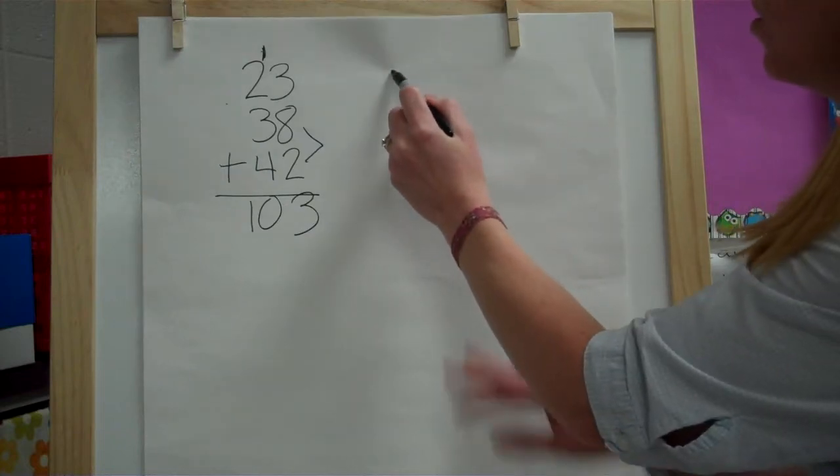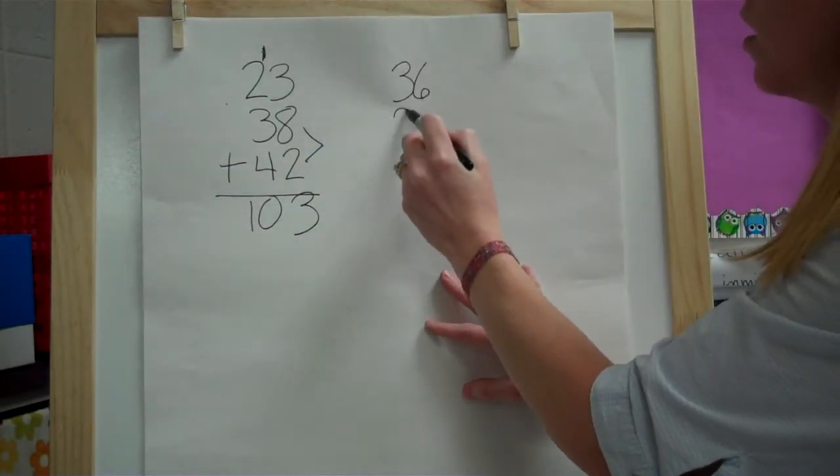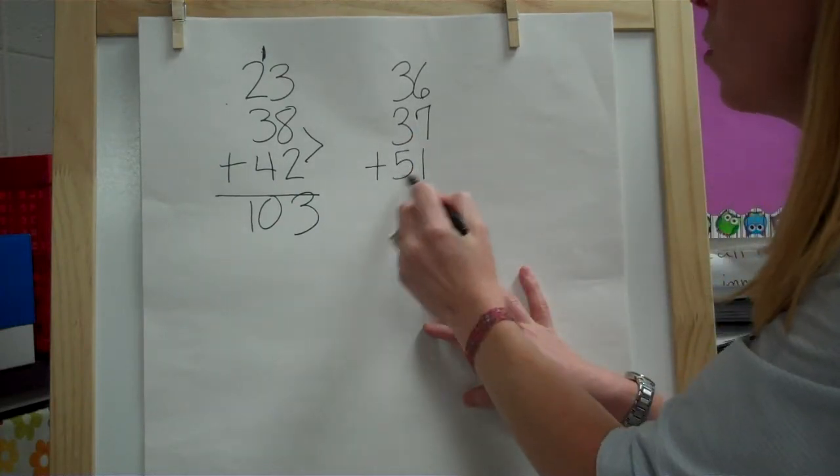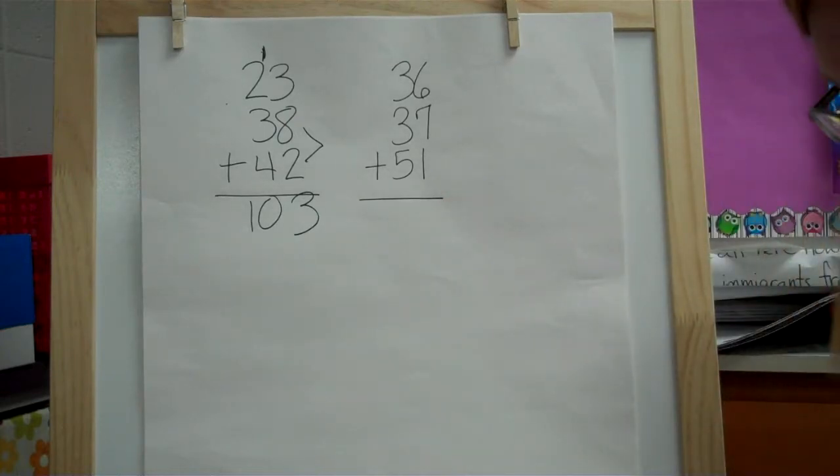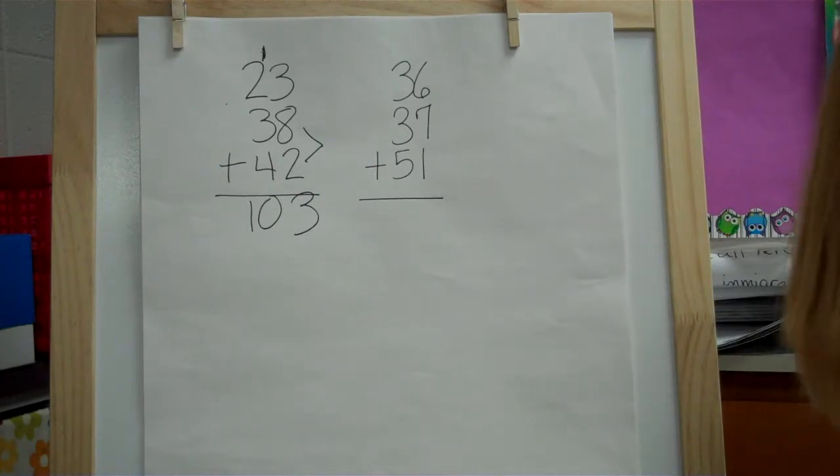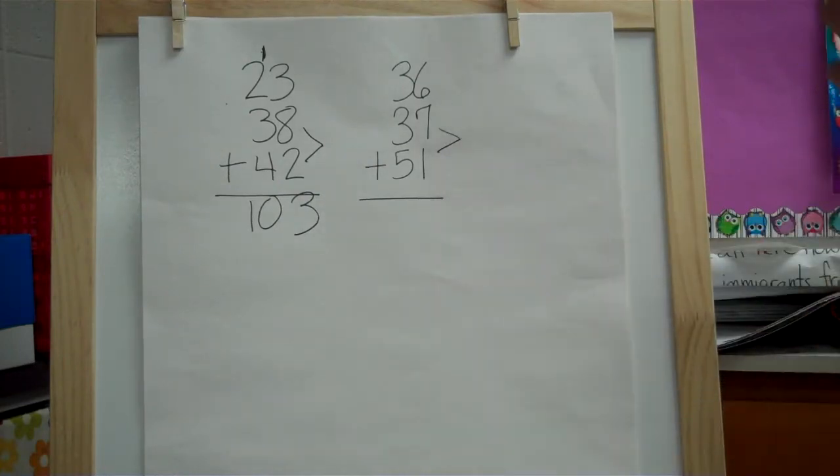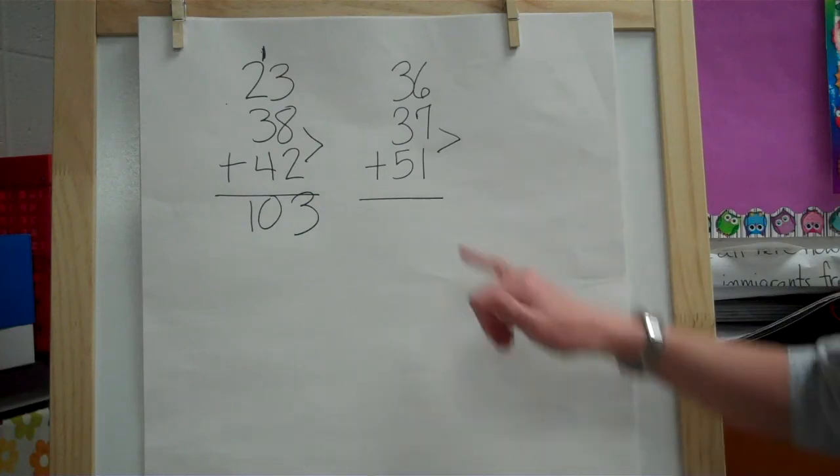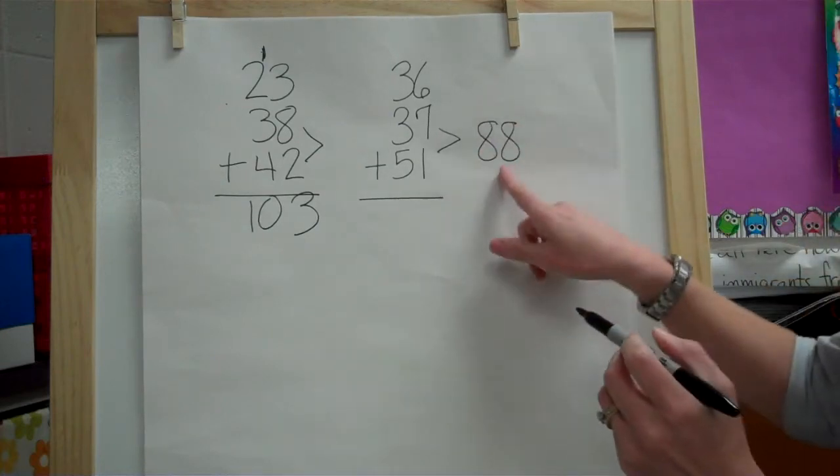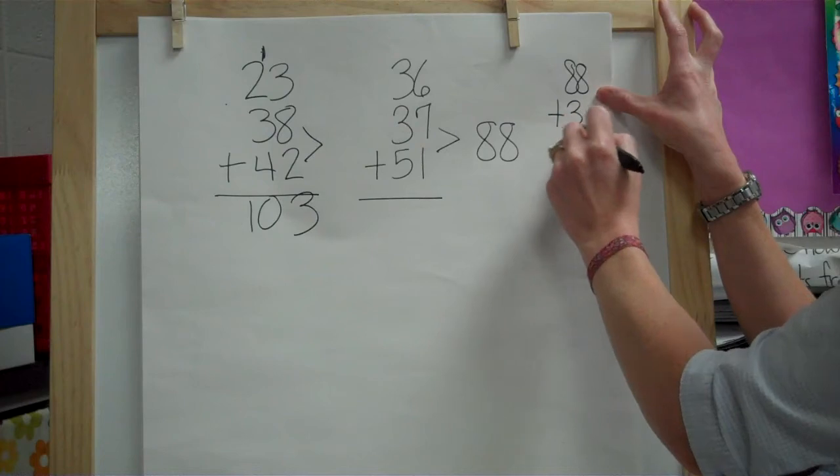Let's try another one. Let's do 36 plus 37 plus 51. Now for this one, I'm going to look at the numbers that would be easy to add without regrouping. So I see these two, I can add without regrouping. So 51 and 37, that would be 88.